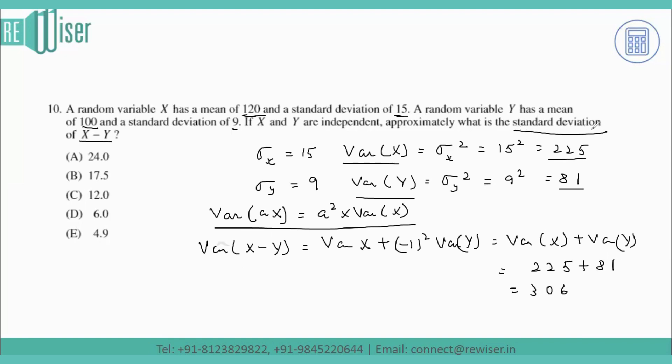The question asks for the standard deviation of X minus Y. To get the standard deviation, I take the square root of the variance, which is approximately 17.5. That is the answer. Option B is correct. Thank you, students.